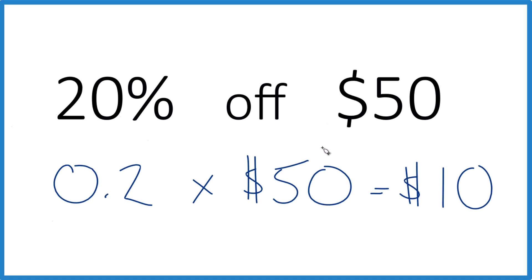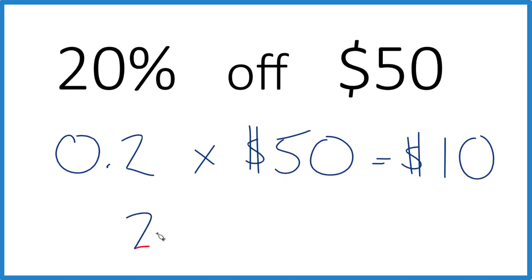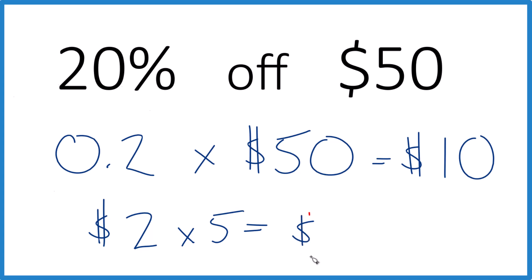When I'm in the store, I might think about it this way: I know that 20% of $10 is $2. And since I have $50, I multiply five times that, which gives me $10 — the same answer as before.